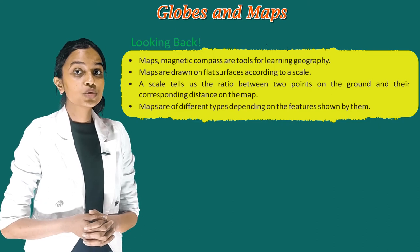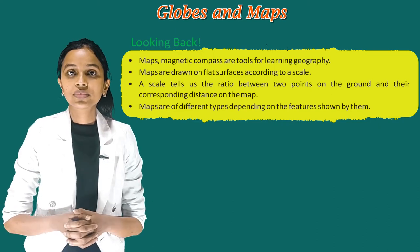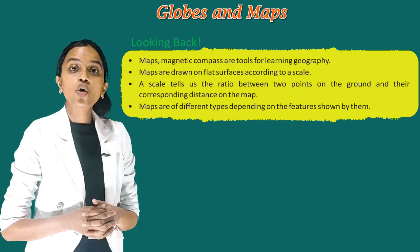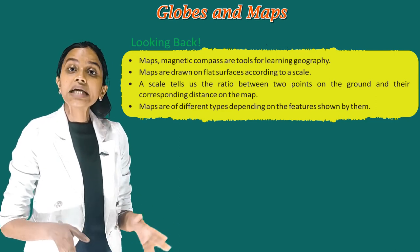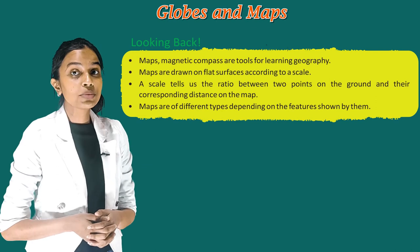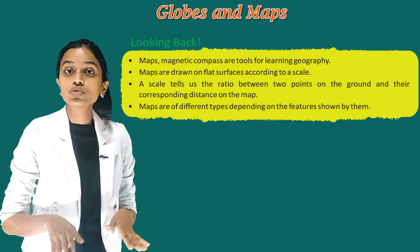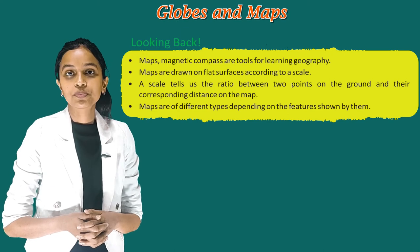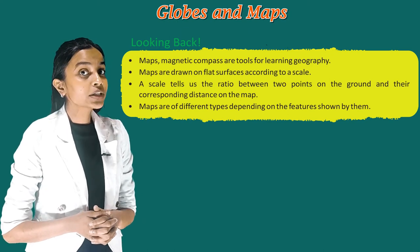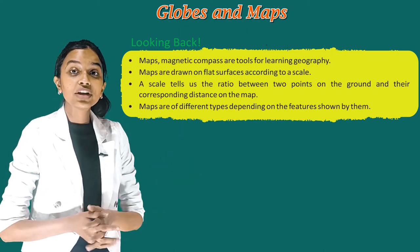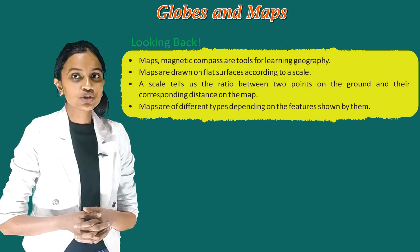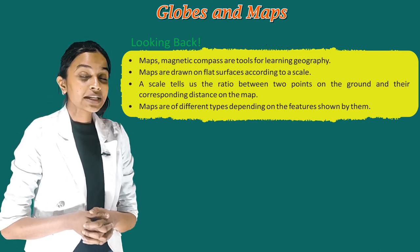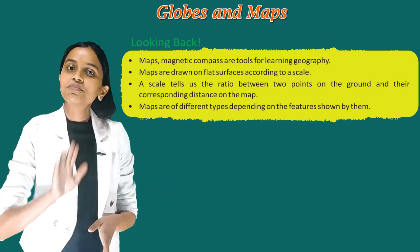Let's look back at what we learned. Maps and magnetic compass are tools for learning geography. Maps are drawn on flat surfaces according to a scale. A scale tells us the ratio between two points on the ground and their corresponding distance on the map. Maps are of different types depending on the features shown by them. So it's time to take your leave. Bye, children!